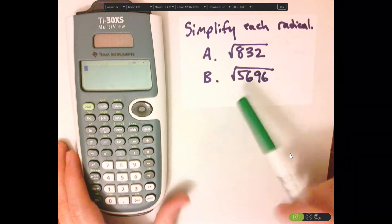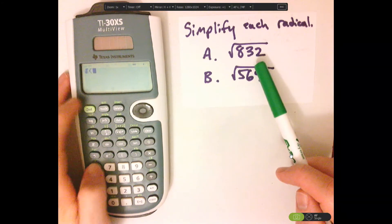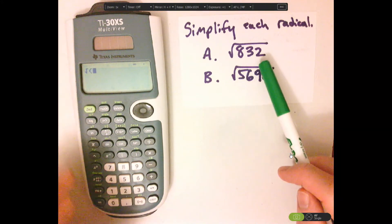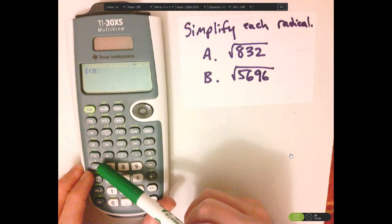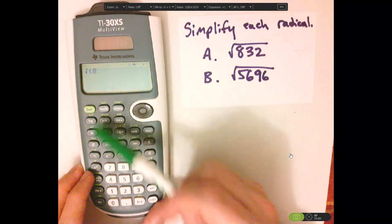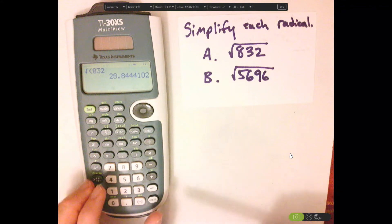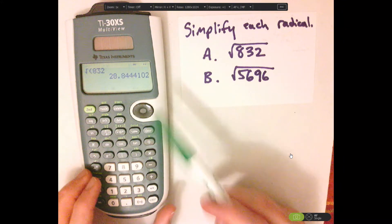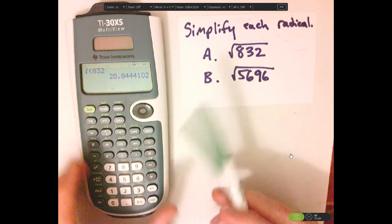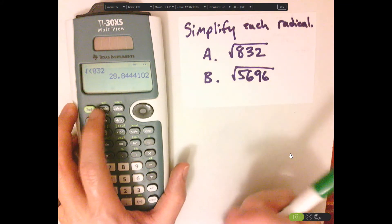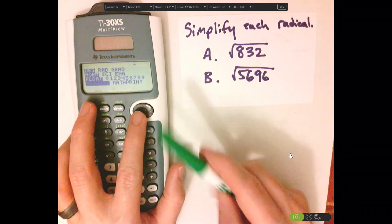Let's first look at the square root of 832. I'm going to do square root — push second, then x squared — and I get a decimal. Maybe I need to change the mode. So if you go to mode, put it in math print.